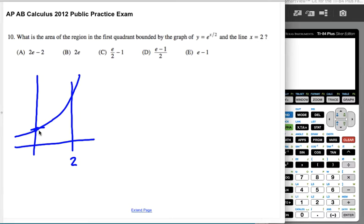So since they said in the first quadrant, they're saying what's the area from 0 to 2 under this curve? So that's going to be the integral of e to the x over 2 dx from 0 to 2.